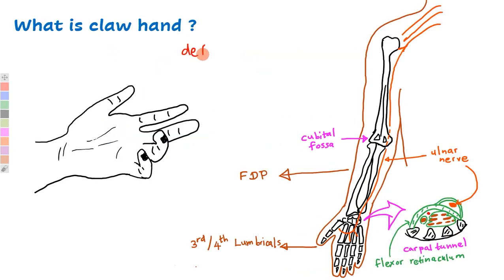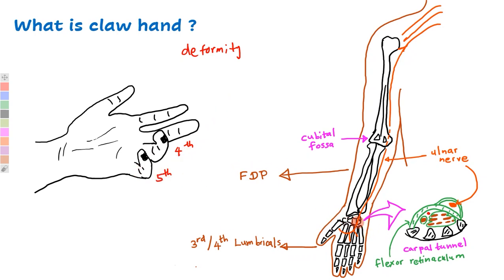What is claw hand? Claw hand is a deformity of the hand which shows abnormal flexion in the fourth and fifth fingers — that means the ring finger and the little finger — due to damage of the ulnar nerve at the wrist.